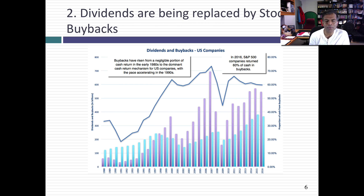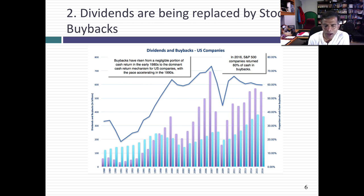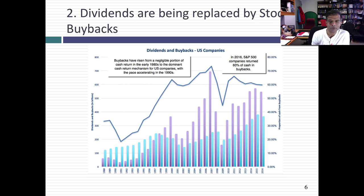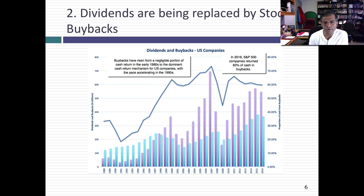Dividends are also increasingly being replaced by stock buybacks, at least in the U.S. This graph brings it home. In 1988, U.S. companies returned about 30% of their cash in buybacks and 70% in dividends. And if you go back to 1981 or 1982, 90 to 95% of the cash returned by U.S. companies took the form of dividends. Take a look at the 1990s — something clearly is going on. You see the proportion of cash being returned in buybacks climbed to 50%, 55%, 60%. And barring one year — 2009 — this has become the fact rather than the exception.